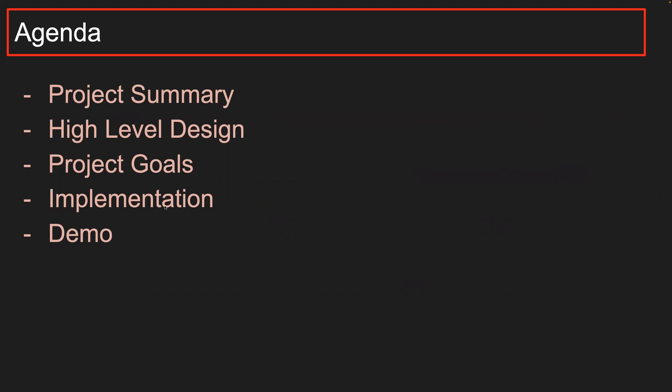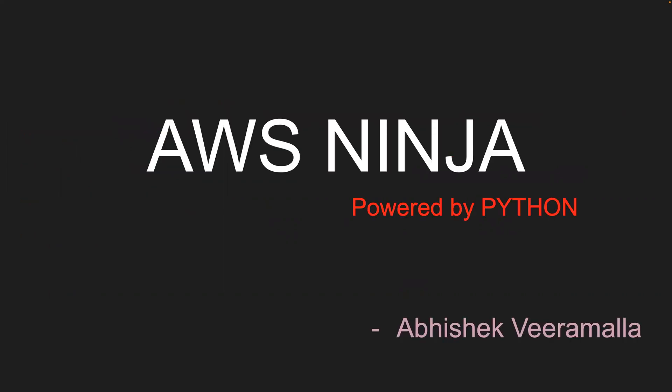We'll talk about implementation and how to implement this project. The demo will be part two because I want everyone to understand this theory part first. I'm going to come up with the demo part as well. The project name I have given is AWS Ninja. End of the video, you will understand why I call it AWS Ninja. This is a project powered by Python because it's going to be implemented end-to-end in Python.